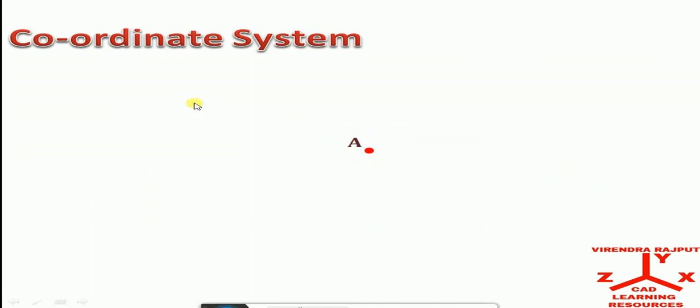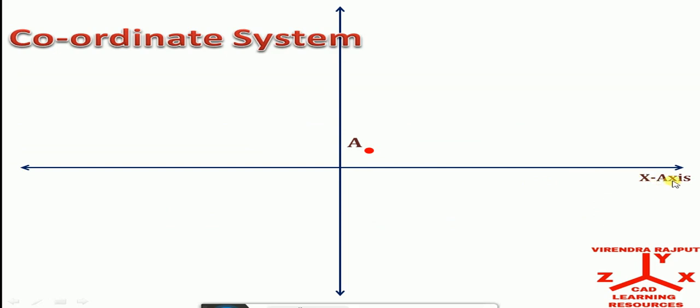To specify this point A in the space, let's take two mutually perpendicular lines as reference: horizontal line called as x-axis and vertical line called as y-axis. Intersection of these two lines is known as origin.